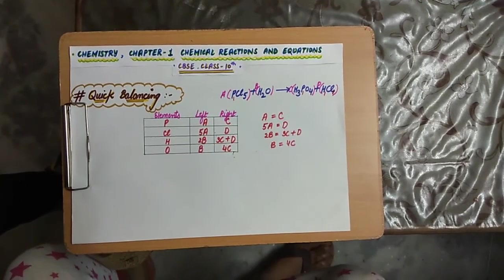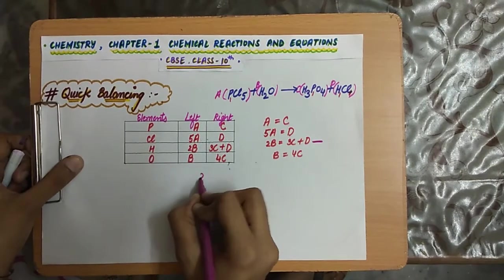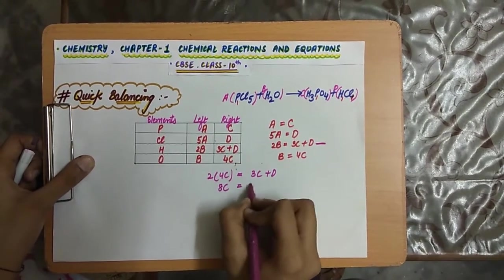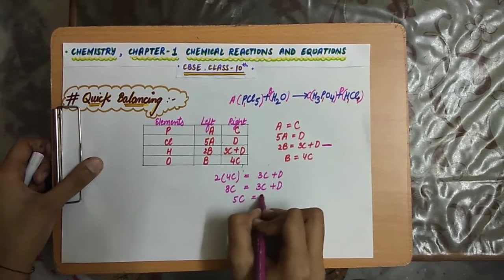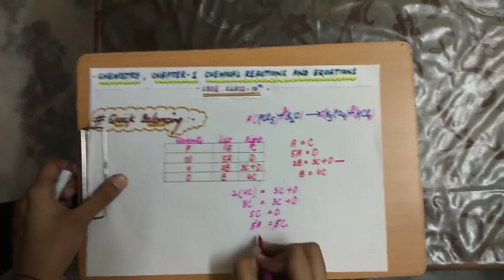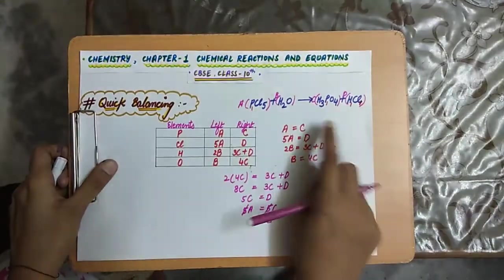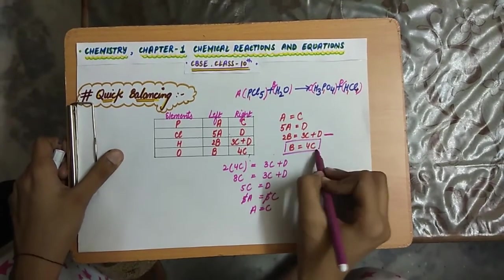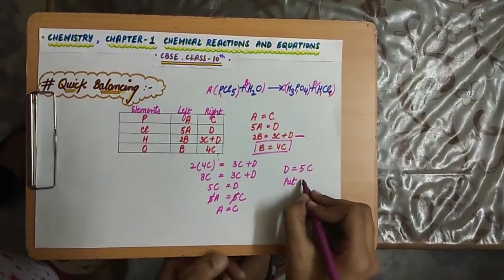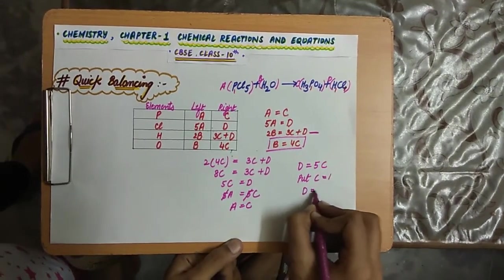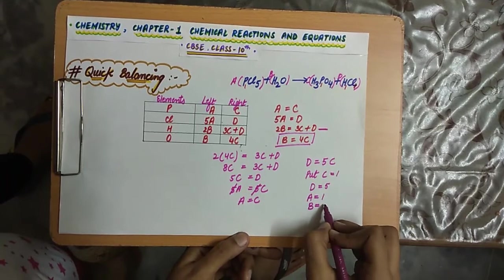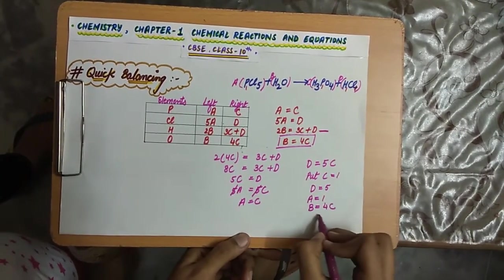Now substituting the value of B into the hydrogen equation: 2 × 4C = 3C + D, which gives 8C = 3C + D, so 5C = D. Also, D = 5A, so 5A = 5C. Cancelling 5 from both sides gives A = C, which confirms our earlier result. One single equation satisfies all others. Now putting C = 1, D = 5C = 5, A = 1, and B = 4C = 4.